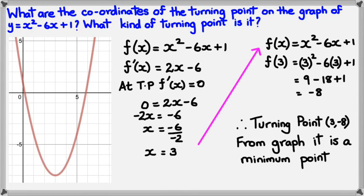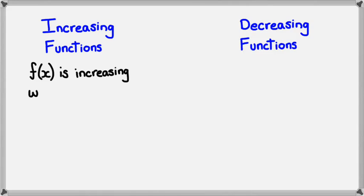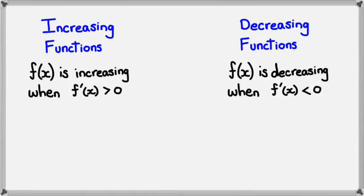Looking at different properties of the curve — the next property we're going to look at is increasing functions and decreasing functions. A function is said to be increasing when f dash of x is greater than 0. So when the gradient is positive, we say the function is actually increasing. For a decreasing function, the function is decreasing when the gradient is negative.